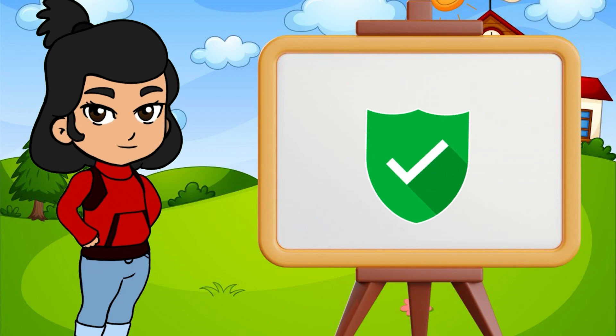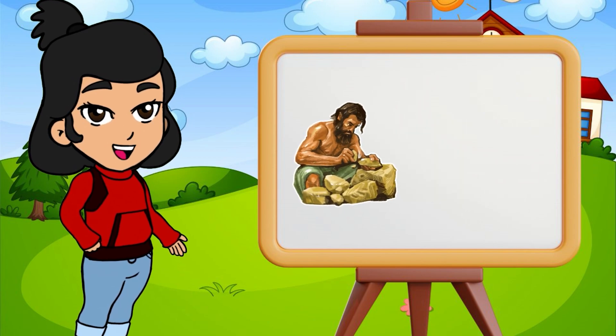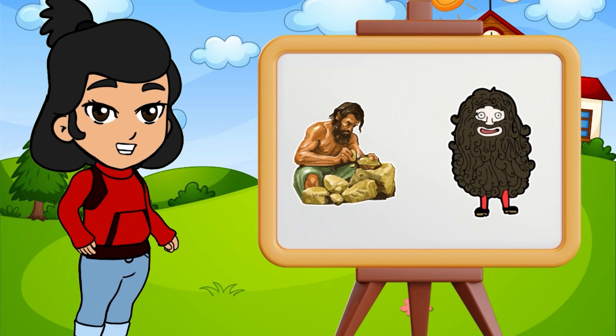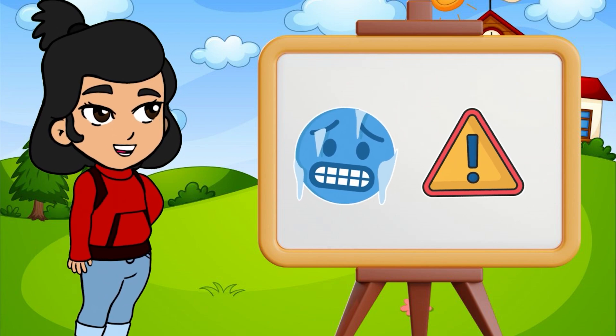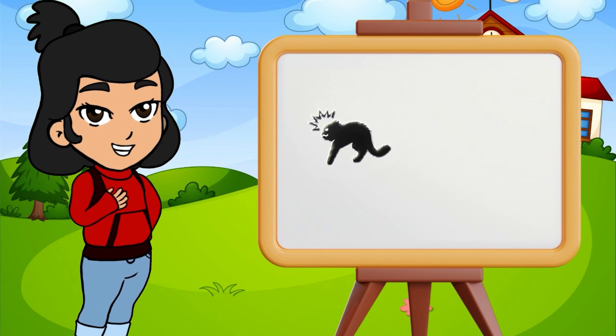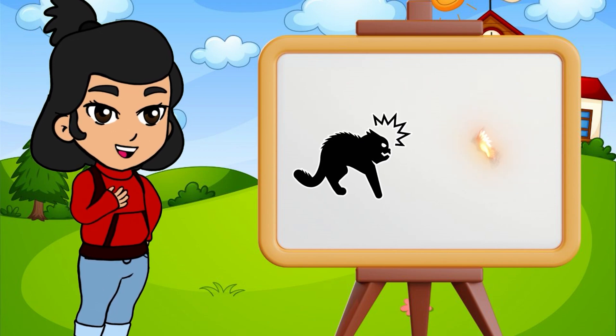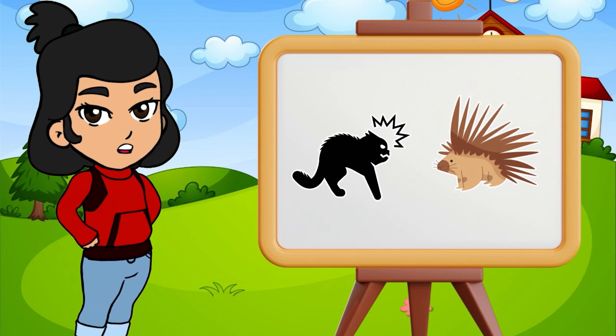But here's the wild part. This reaction is super ancient. Way back in time, humans had a lot more body hair. When they felt cold or threatened, their hair would stand up, helping to trap heat and make them look bigger, just like animals do today. Think of a cat that puffs up when it's scared, or a porcupine raising its quills. Goosebumps work the same way for early humans.